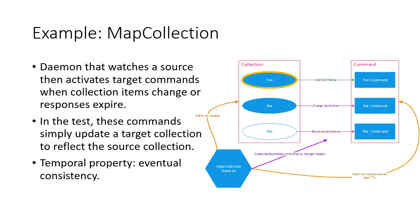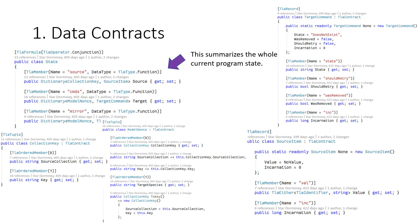As an example, I'll use Map Collection, one of the distributed systems recipes that I checked with Kayfabe. It's a simple daemon that watches a source collection and activates target commands when each collection item changes, gets added, or when responses handling that expire. In this test, the commands simply update a target collection to reflect the source collection, creating a sort of mirror. The only temporal property checked with TLC is eventual consistency. The state consists of the source collection, all commands, and the mirror - which is the same type as the source collection but is the target. Each one of these boils down to further complex types until we have all the TLA+ members we need.